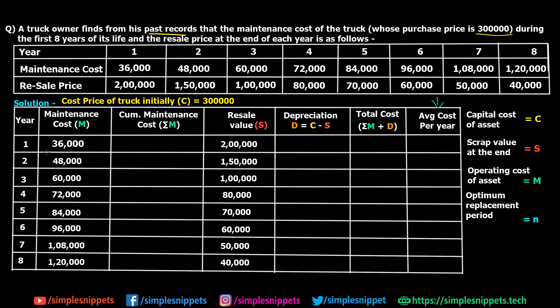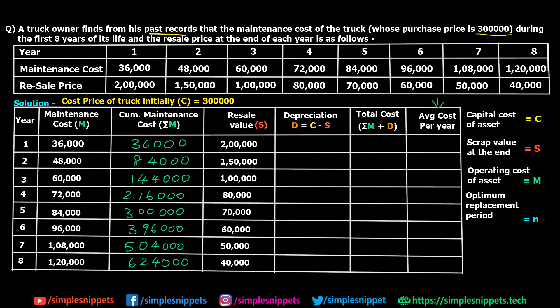Cumulative maintenance is just the running summation of maintenance costs. For year 1 it is 36,000. For year 2 we add 36,000 plus 48,000 to get 84,000. For year 3 we add 84,000 plus 60,000 to get 1,44,000, and so on. I encourage you to write this numerical along with me and use a calculator, as it will likely be allowed in your exams.